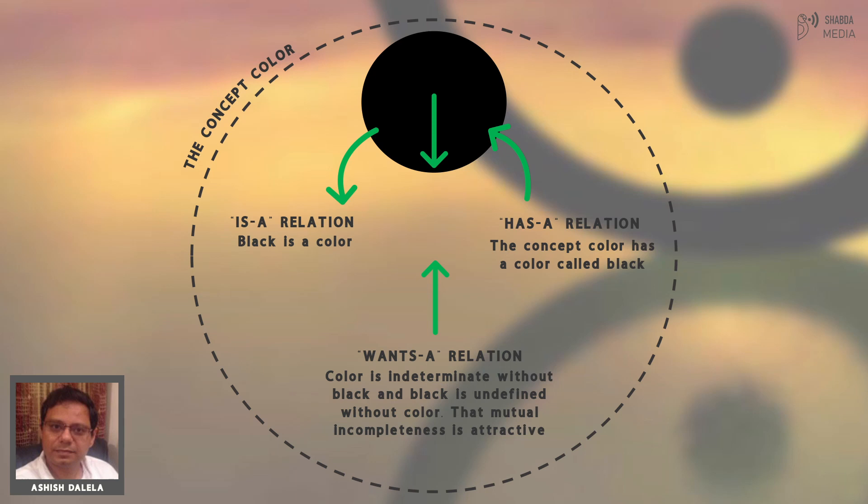The essence of this tradition is that there are three kinds of relations between the whole and the part. I call these relations is-a, has-a, and wants-a. For example, the concept color has a color called black. This is the relation from color to black. However, the inverse relation from black to color is different. It is an is-a relation where we can say that black is a color. The has-a relation leads to transcendence, and the is-a relation leads to imminence. And then there is a relation of mutuality, of wants-a,